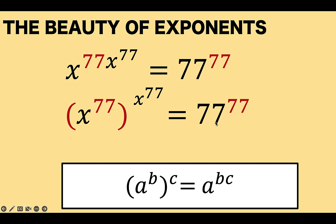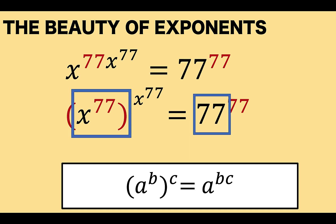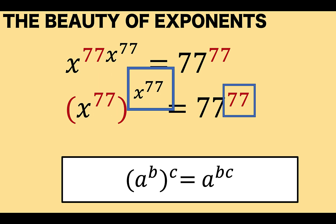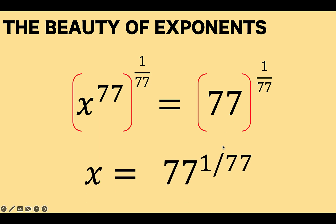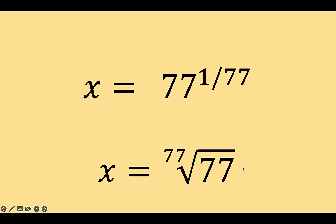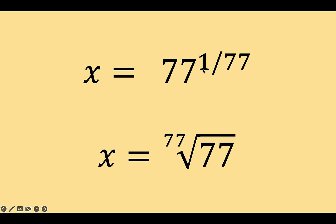Notice on the right that you have 77 raised to 77 as well. So it's clear that the base is equal to 77 and the exponent is also equal to 77. Therefore, x raised to 77 equals 77. To solve for x, we raise both sides to 1 over 77. Multiplying 77 times 1 over 77 gives 1, so the left side is x, and the right side is 77 raised to 1 over 77. This can also be written in radical form as the 77th root of 77.